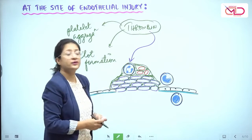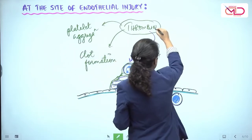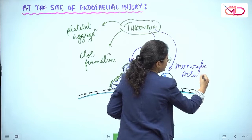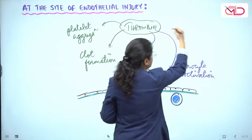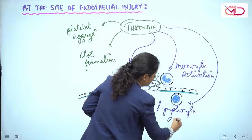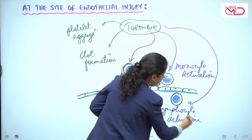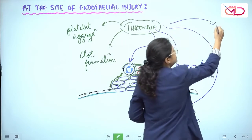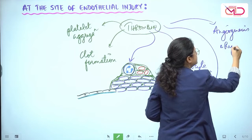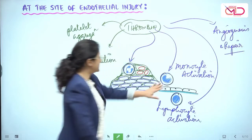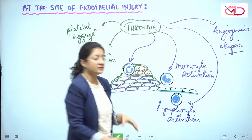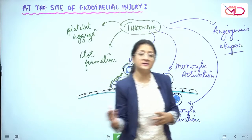Thrombin is the molecule that triggers it all — neutrophil adhesion, monocyte activation, lymphocyte activation. The repair cells of our body, the white blood cells, are triggered into action, and ultimately angiogenesis and repair of this injured vessel will take place. So we understand that coagulation factors and anticoagulation factors in our body are maintaining a balance.